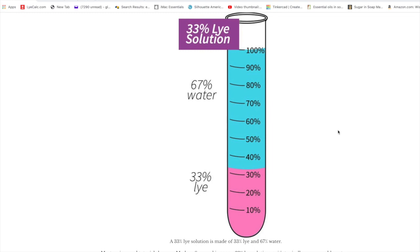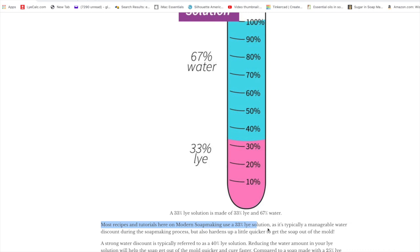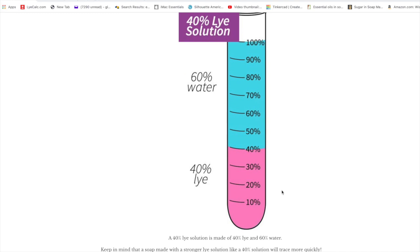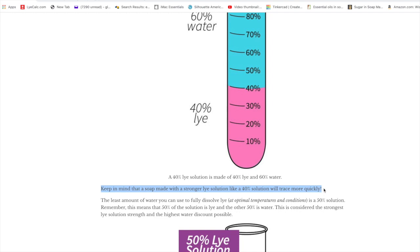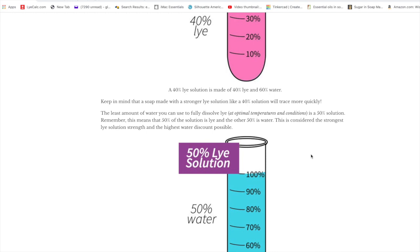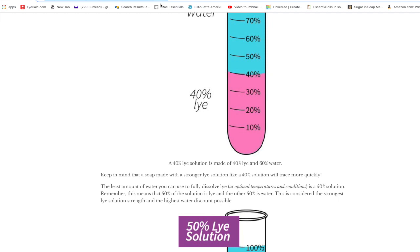Usually I like to use a 33 percent lye solution. It's a good balance because it allows you to do some swirls and design, but still sets up faster. But lately I've been moving to doing a 40 percent lye solution. She warns you that a stronger lye solution is going to trace more quickly, but I kind of like that because it means my soap is going to shrink less because it has less water, so the cure time is also going to be reduced slightly.